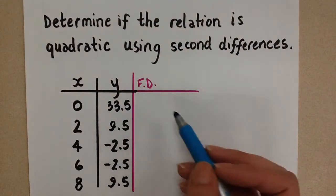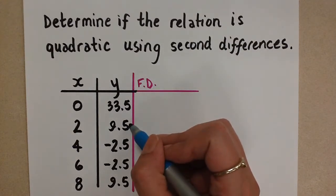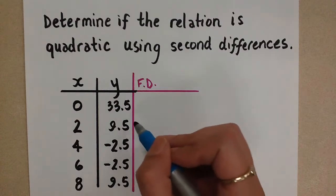So let's start off by doing the first differences, and we do that by taking the first two y values in the y column and subtracting them.